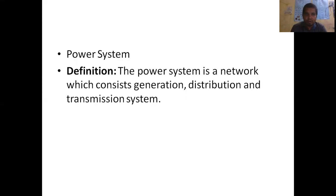Our system is a network which consists of generation, distribution, and transmission system. The power which is generated from the power generating station is not used nearby. It is generated and transmitted through the transmission line and distributed to the consumers through the distribution system. This whole network starting from power generation and transmission, then distribution to consumers, is called a power system.